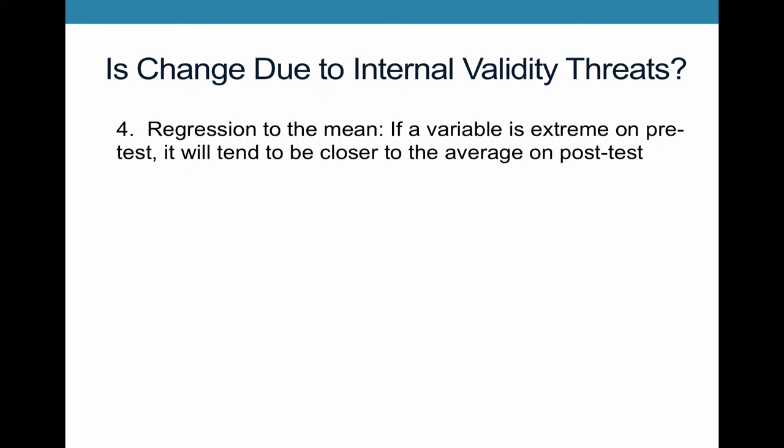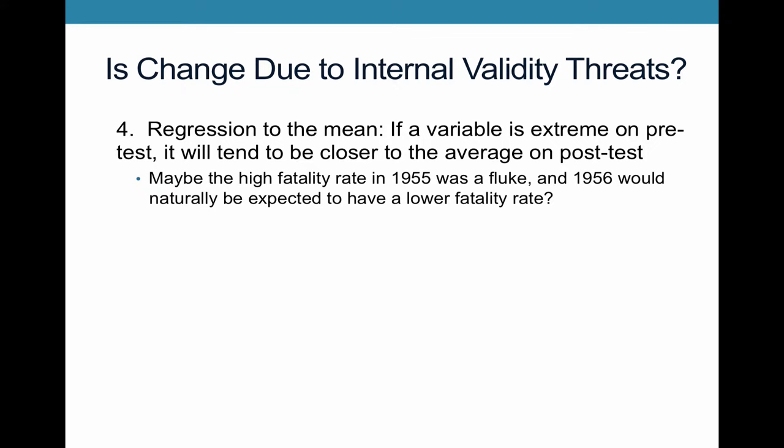And then fourth is a term called regression to the mean. This comes up in time series designs. So regression to the mean is that if a variable is extreme on a pre-test, it will tend to be closer to the average on a post-test. If you have an outlier the first time around, you're probably not going to have an outlier the second time around. So maybe that high fatality rate in 1955 was just a fluke. And so naturally, you would expect in 1956 that it's going to have a lower fatality rate.